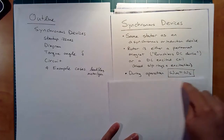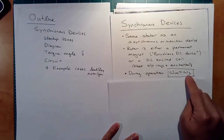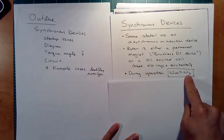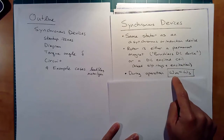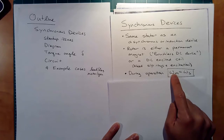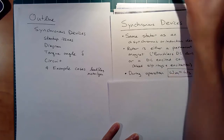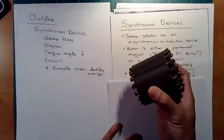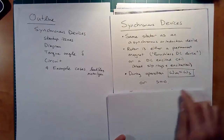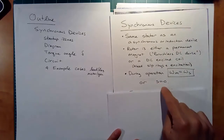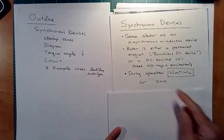During operation, the speed of the magnetic field — the synchronous speed — is the same as the rotor speed, unlike an induction device where you have some slip. So S equals zero: no slip.